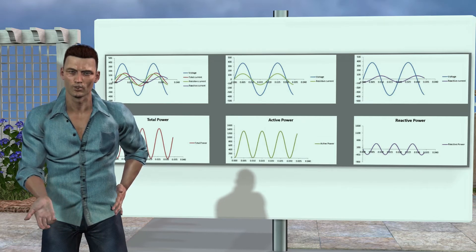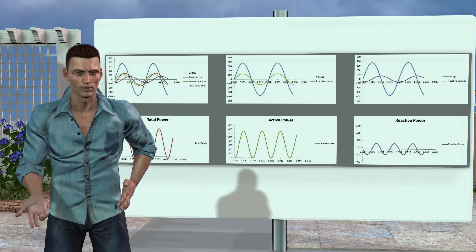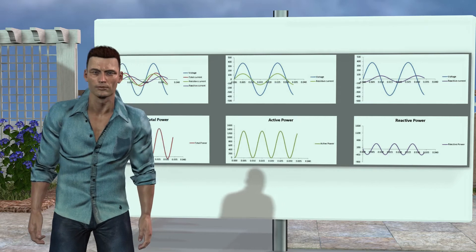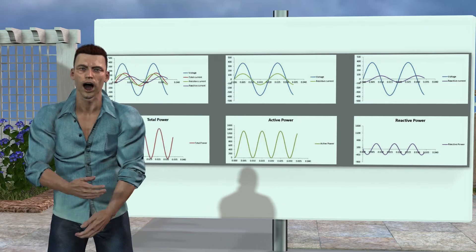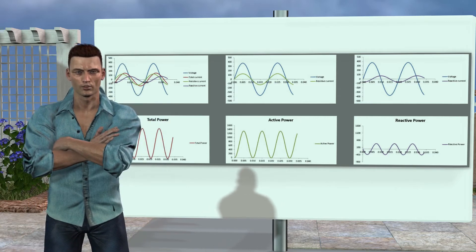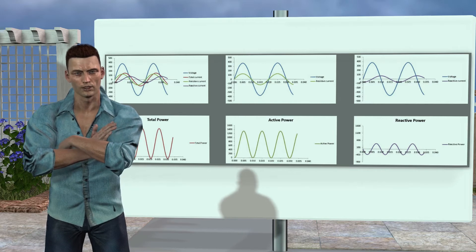As we see, the active power p, is always greater than, or equal to zero, and represents the useful work done by the load, considering useful work as the generation of heat, movement, etc.